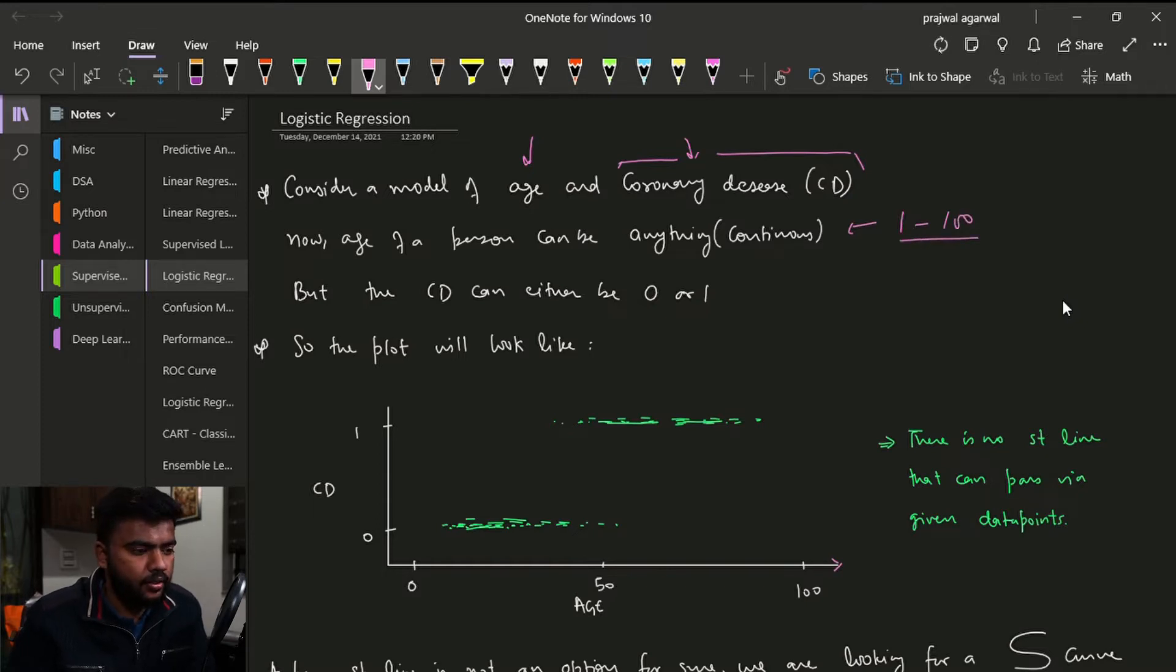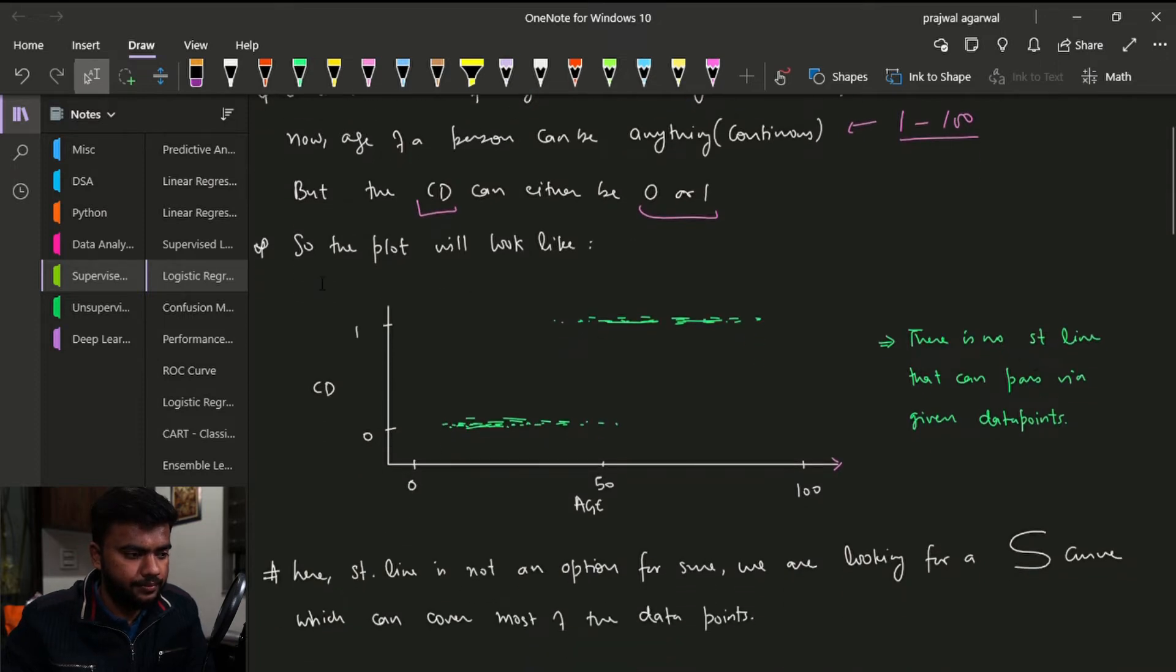And then we have the possibility of having a coronary disease, and the value for this particular thing is going to lie between 0 and 1. For example, they may have a disease or they may not have a disease. So there is nothing in between. So if we are plotting a graph for this, then we are going to have a plot like this which is clearly showing that it is very rare in younger people and it is very common in elder people.